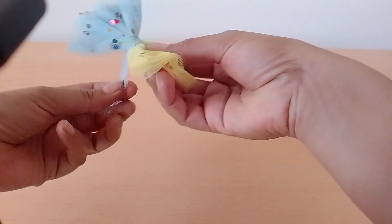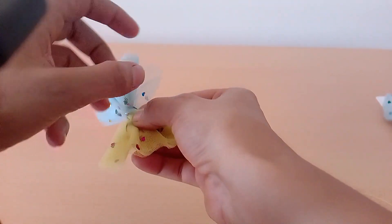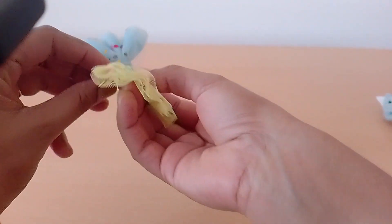After folding the strip just take two rounds around the bow and then tie a knot.